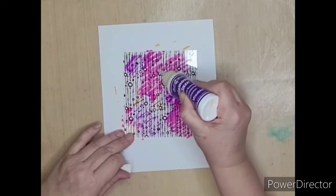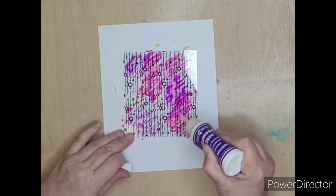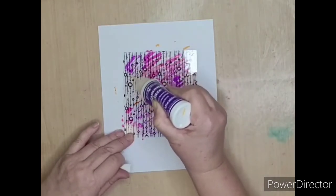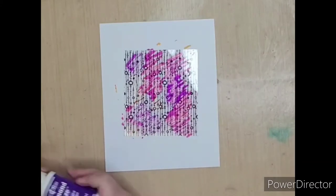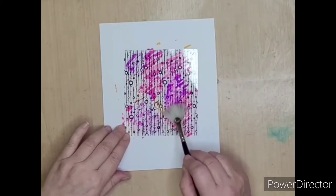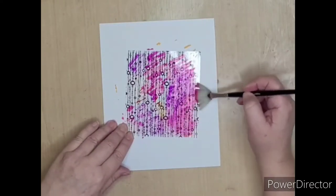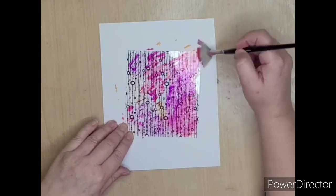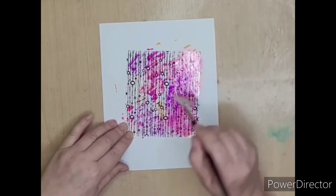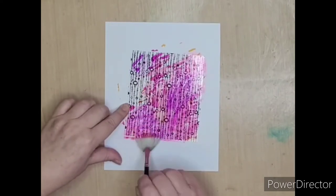We're just going to drizzle it all over, and then if you have a wide fan-style brush, that is perfect for moving the diamond glaze around. Just gently, you don't want to mix the colors too much, just enough. As you can see, it picks up all the color. So gently brush to the edges and make sure it's all covered.